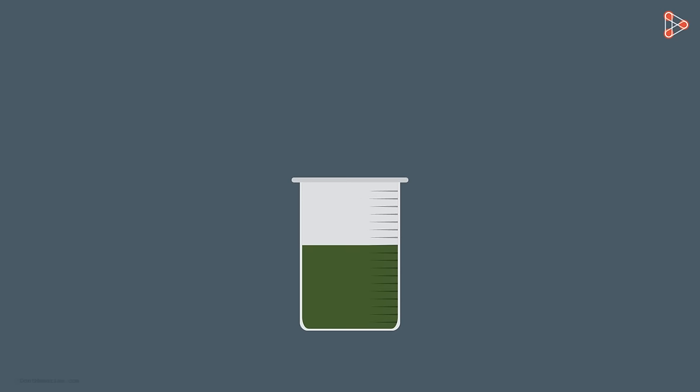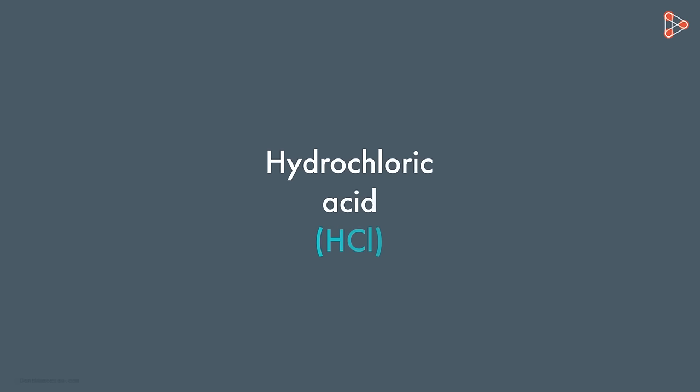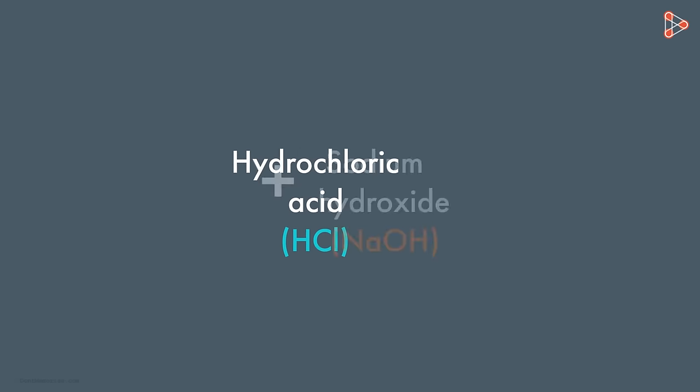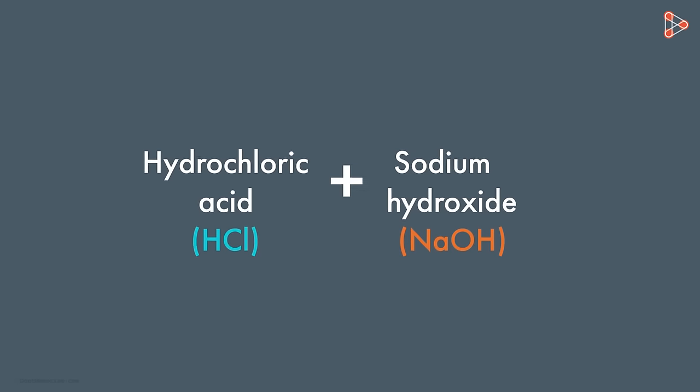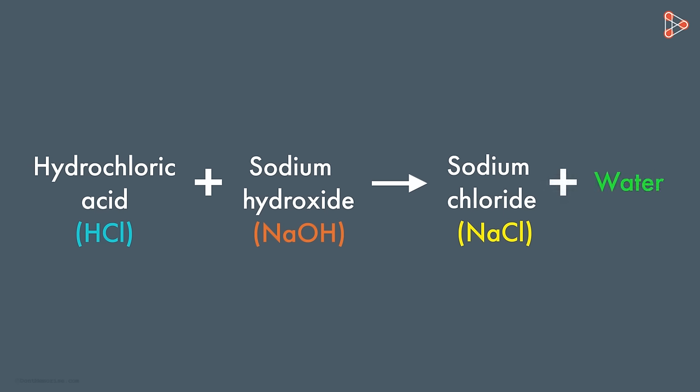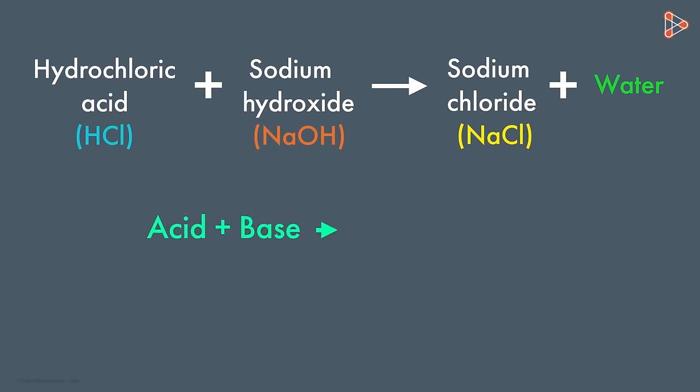Imagine we mix a strong acid like hydrochloric acid with a strong base like sodium hydroxide. What will be the result then? The reaction yields sodium chloride and water. Sodium chloride is the common salt used by us. So, an acid with a base gives us salt and water. This is a generalized reaction. Salts are the products of reaction between an acid and a base.